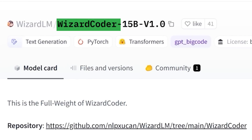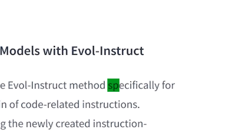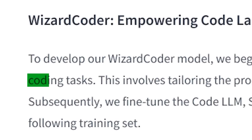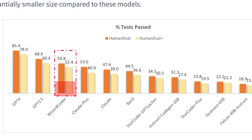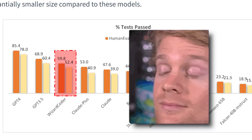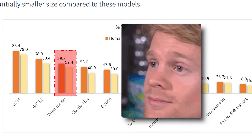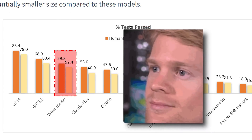WizardCoder is a brand new 15 billion parameter LLM fully specialized in coding that can apparently rival ChatGPT when it comes to code generation.